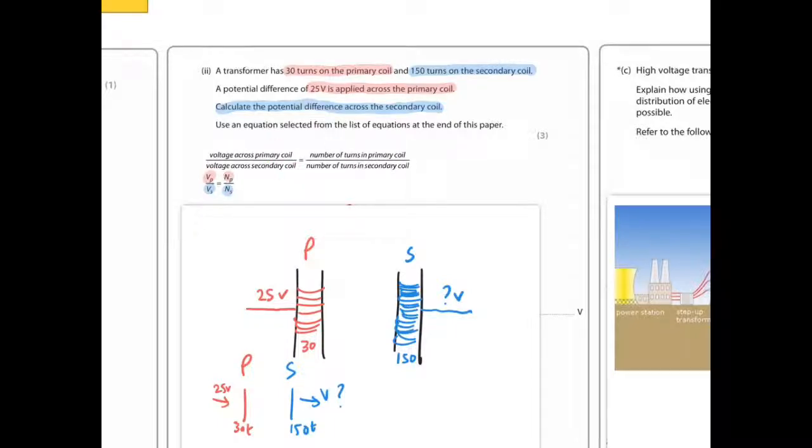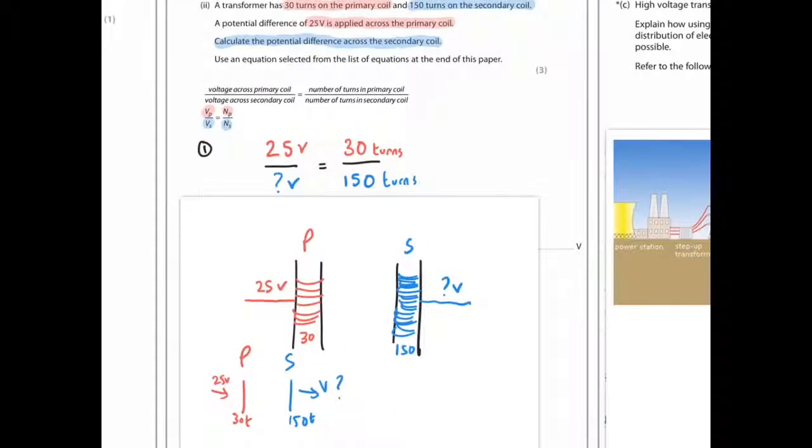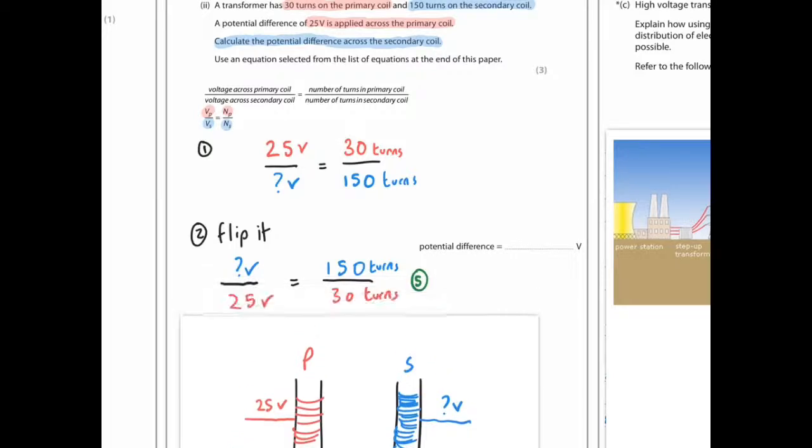So we know that this is our situation at the moment. We know 25 volts for the primary but we don't know secondary. We know 30 turns for primary and 150 turns for the secondary. If it's easier what you can do is flip it the other way around so you get a nice tidy division.